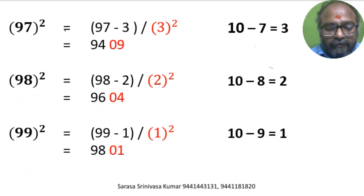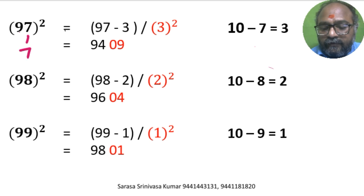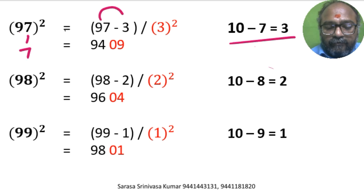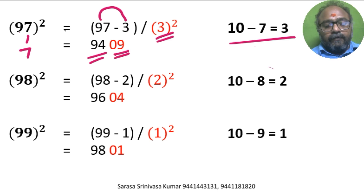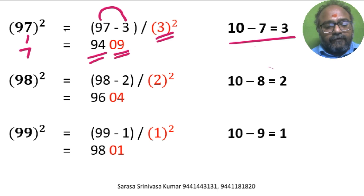97 square. Units digit is 7. So 10 minus 7 is 3. 97 minus 3 is 94. 3 square is 9. We write it as 09. So 94, 09 is the answer.